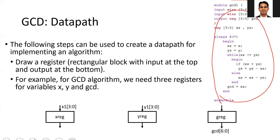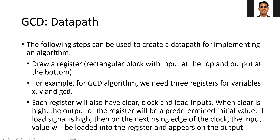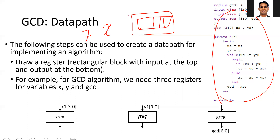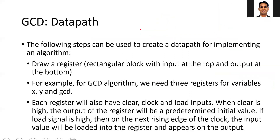Each register will have three signals: clear, clock, and load signal. The register stores a value — for example, if x is a seven-bit value, it is nothing but seven flip-flops storing the data. To store data inside the flip-flop, we need a clock signal because a flip-flop is a sequential circuit. We need a load signal so that whenever load equals one, data will be stored inside the flip-flop, and whenever load equals zero, the previous data will be retained.